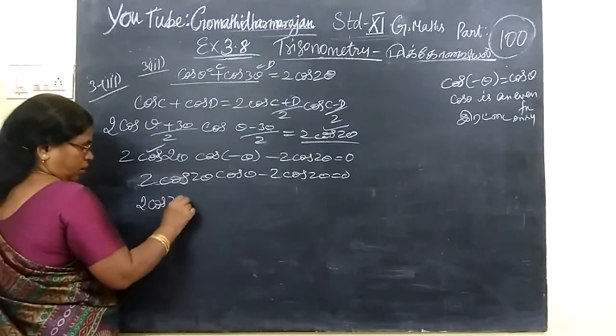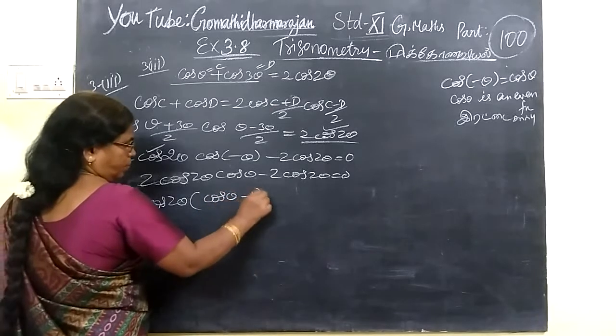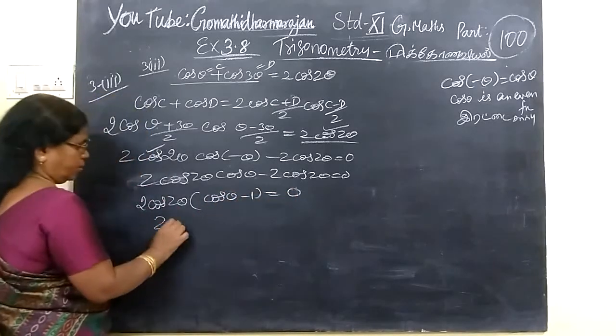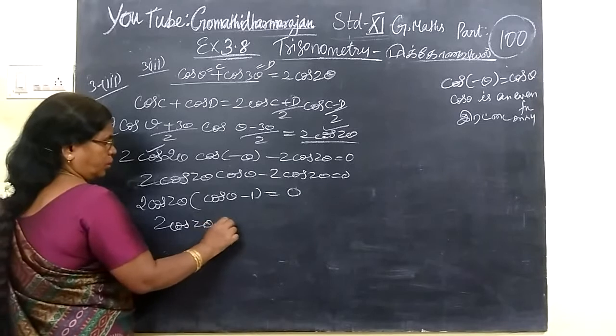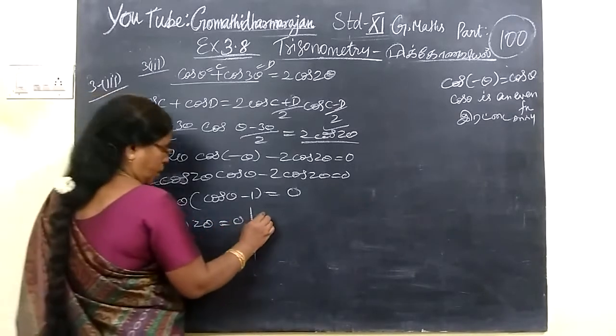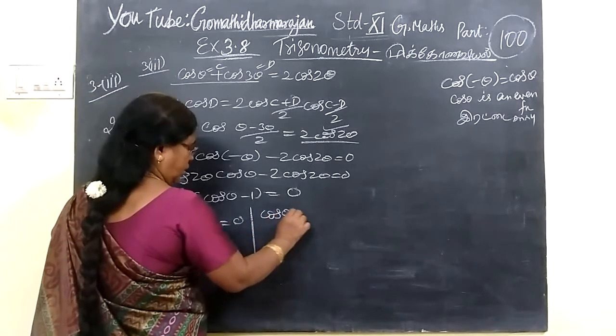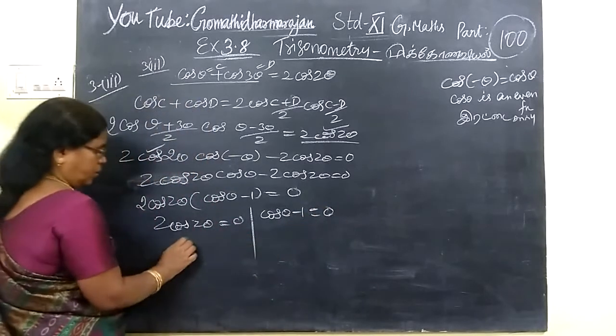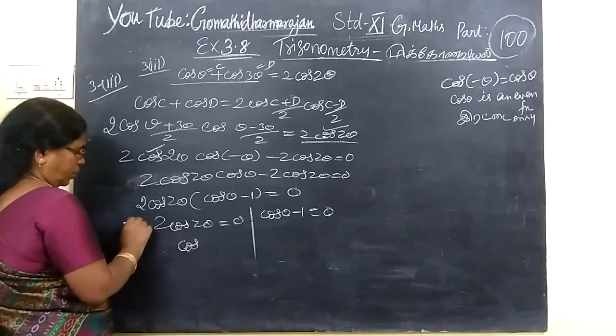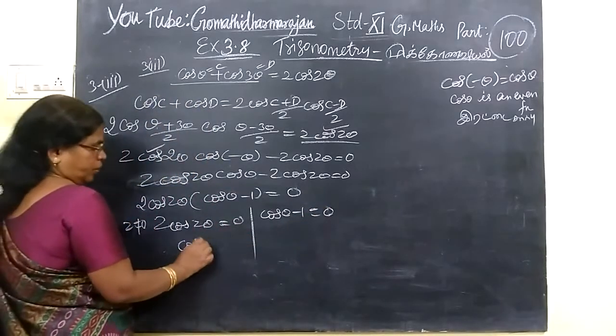Now you take 2 cos 2θ, you can write (cos θ minus 1) equals 0. So 2 cos 2θ equals 0 or cos θ minus 1 equals 0.